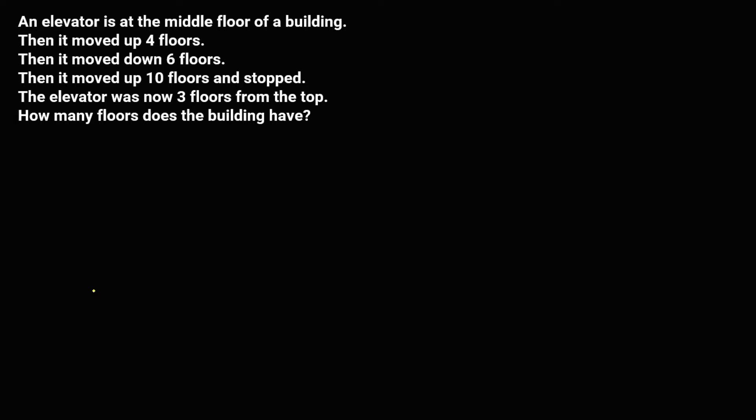So how many floors does the building have? To solve for this problem, first we let n be the number of floors. Then since in the problem the elevator was now 3 floors from the top, and n is the number of floors, therefore this one is n minus 3.